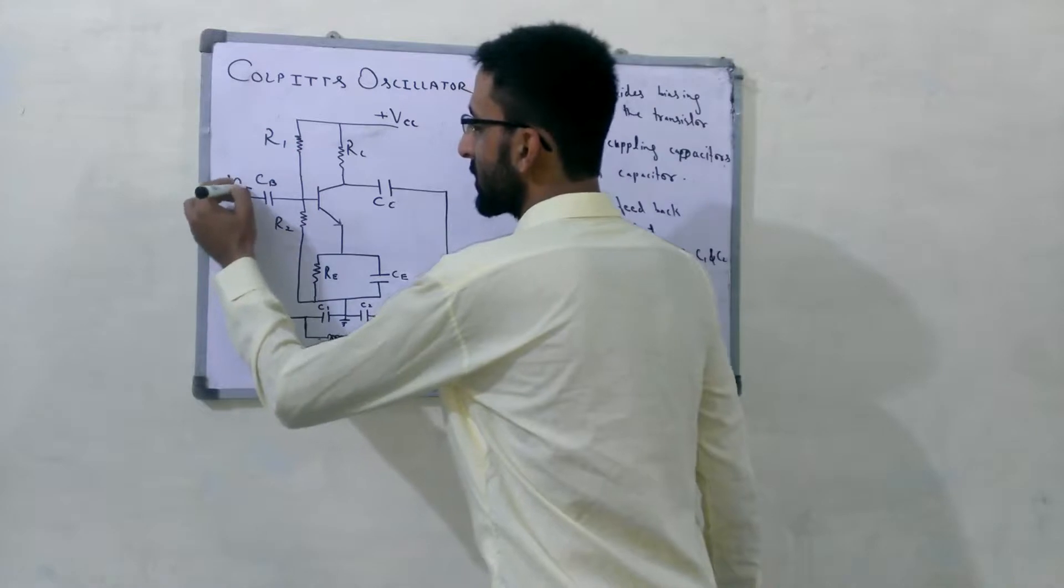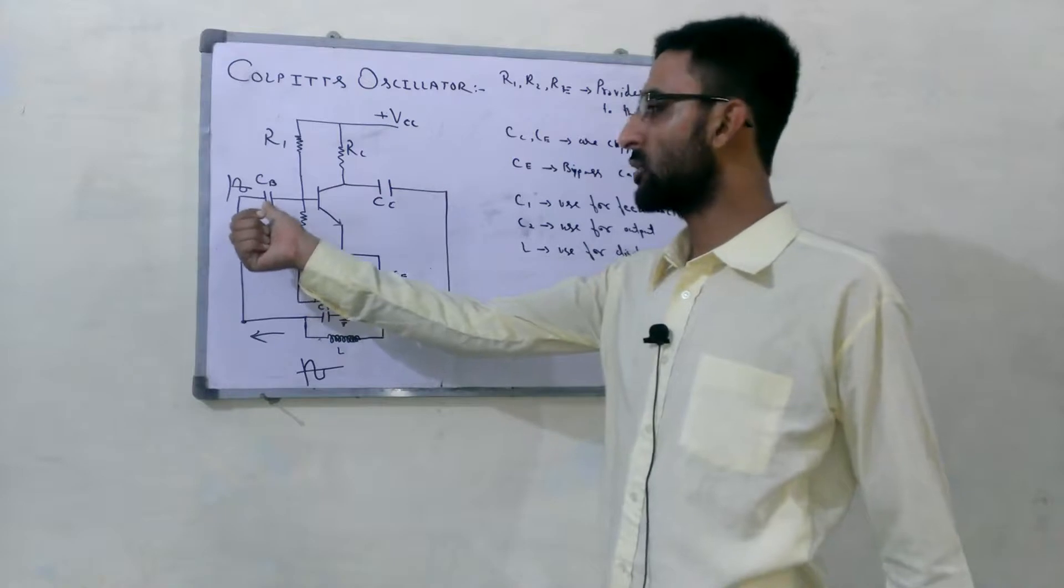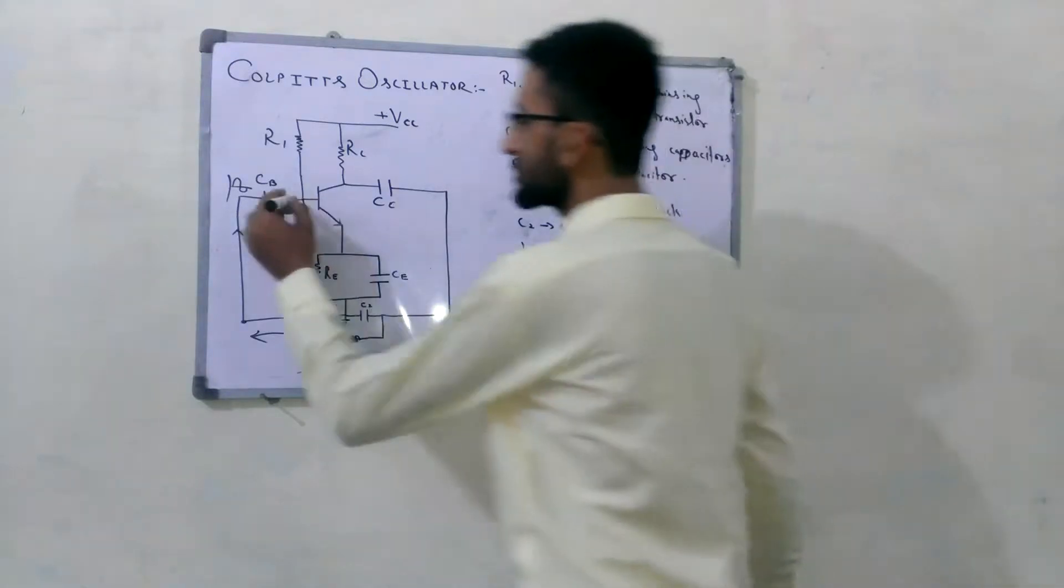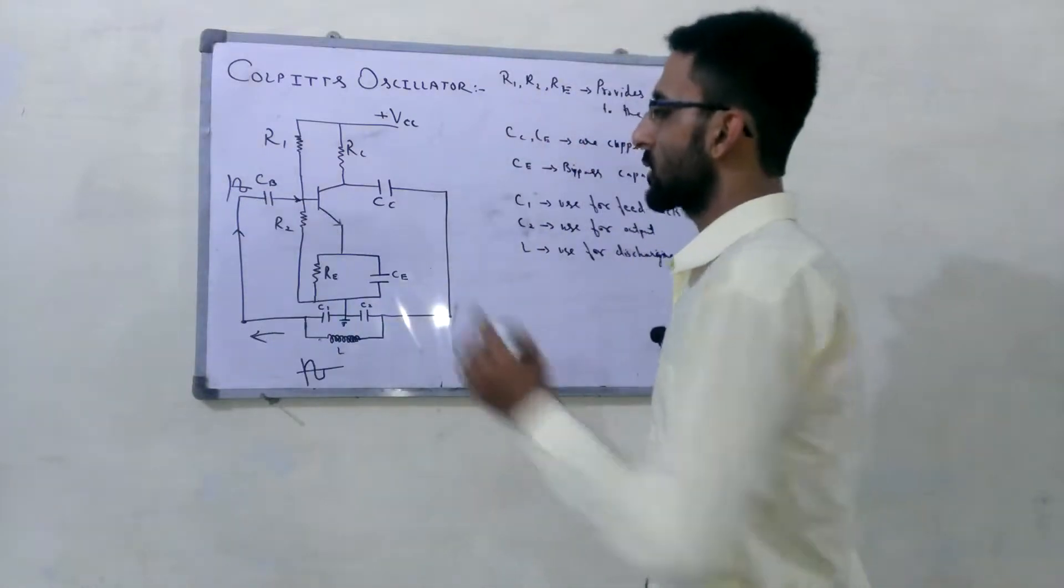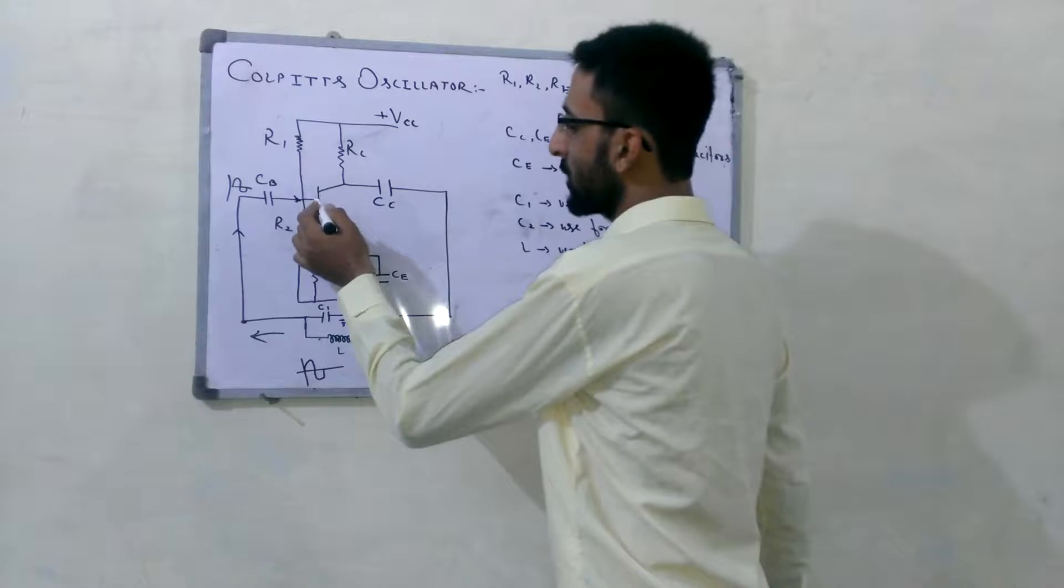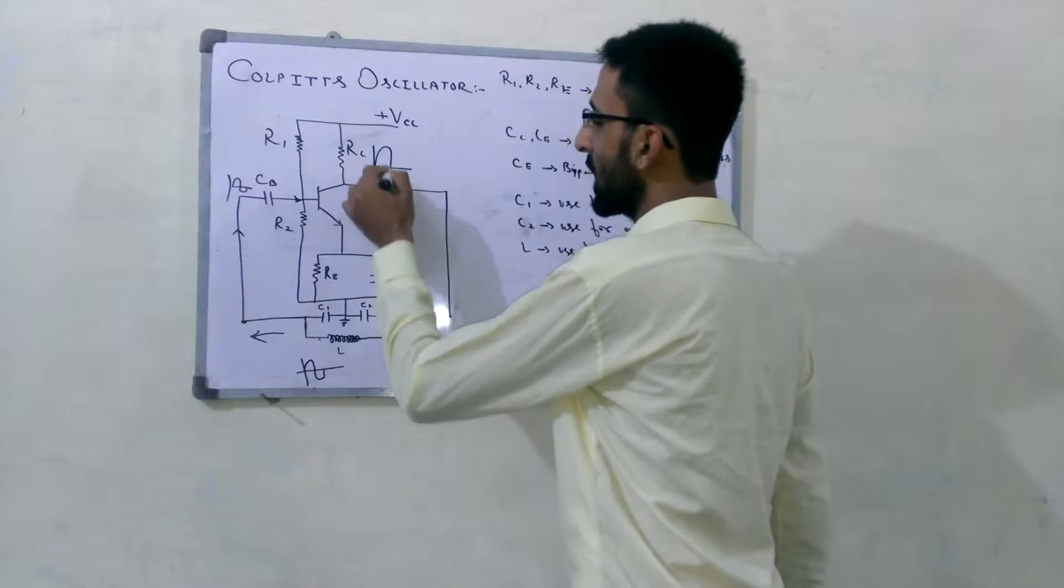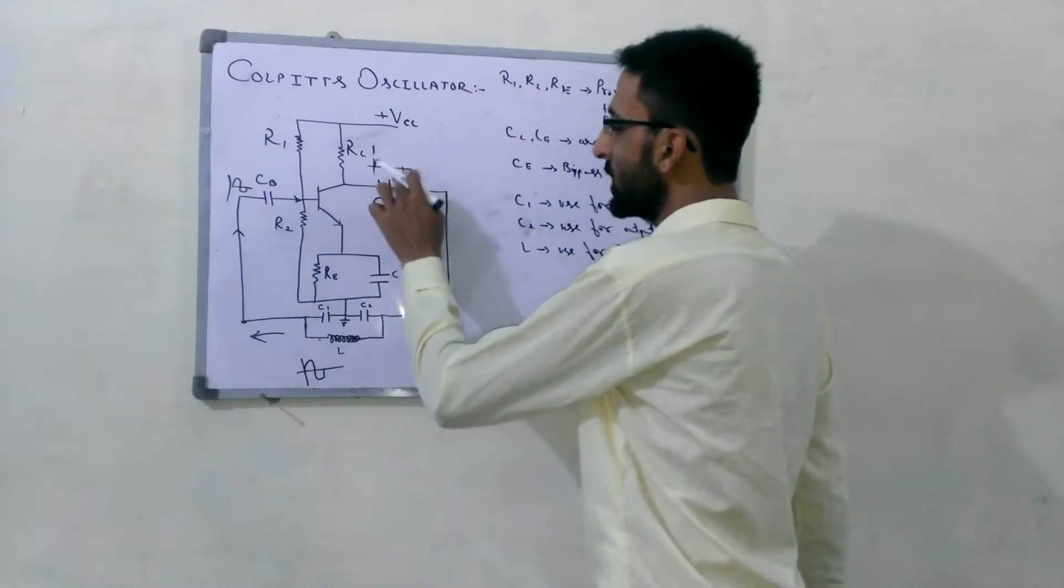This signal reaches here. CB allows it to flow towards the base. As shown here, after passing through the base, it reaches here in the form of amplification with phase inversion of 180 degrees.